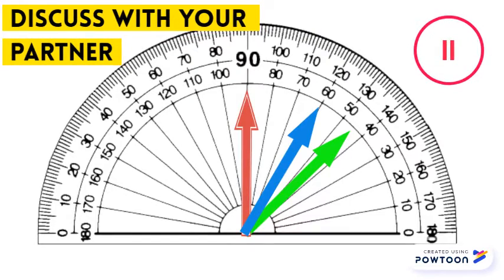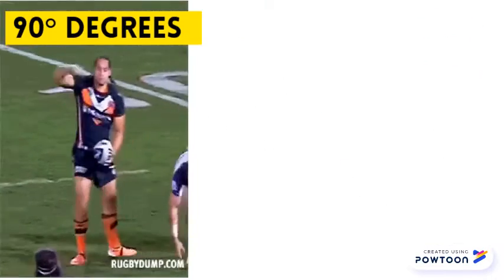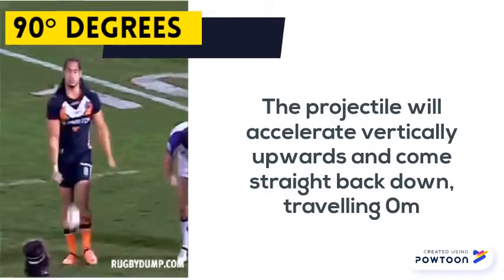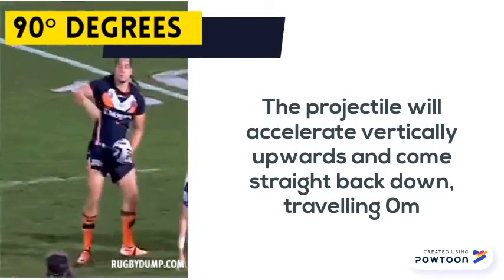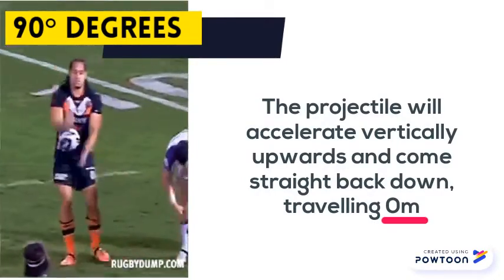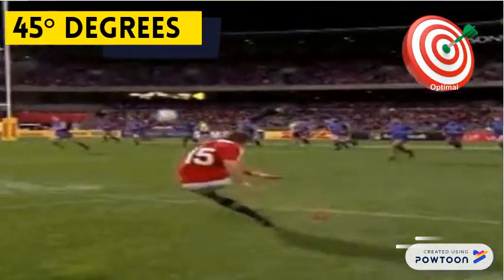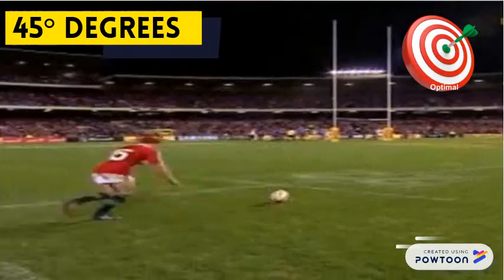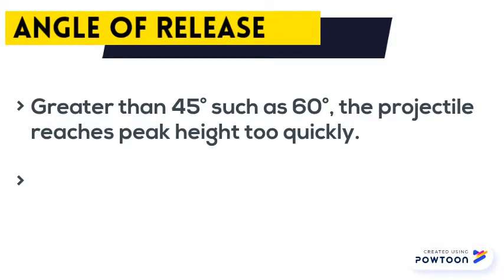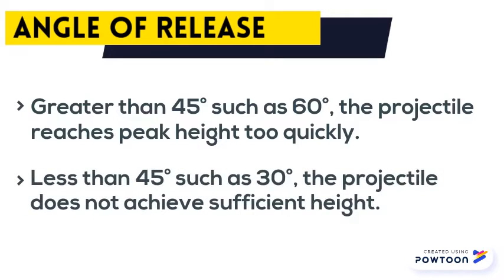Discuss with your partner. At a 90 degree angle, the projectile will accelerate vertically upwards and come straight back down, travelling 0 metres. 45 degrees is the optimal angle to maximise horizontal distance. Angles greater than 45 degrees reach peak heights too quickly and rapidly return to the ground. Less than 45 degrees, the projectile does not achieve sufficient height to maximise flight time.